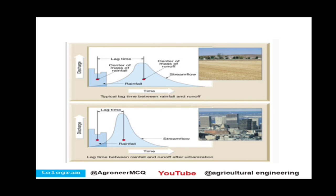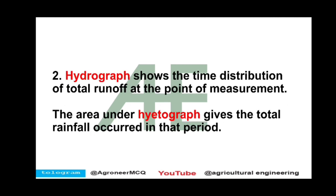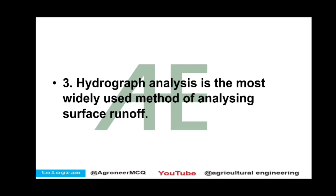These are examples of Hydrographs showing discharge versus time. To differentiate: a Hydrograph is a graphical plot of discharge versus time, whereas a Hytograph is a plot of intensity of rainfall against the time interval, usually represented by a bar chart. The Hydrograph shows the time distribution of total runoff at the point of measurement, whereas the area under the Hytograph gives the total rainfall that occurred in that period. Hydrograph analysis is the most widely used method of analyzing surface runoff.